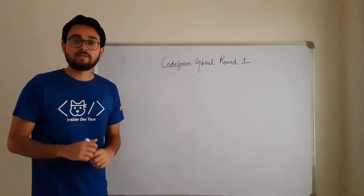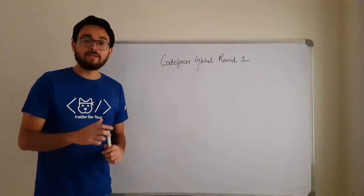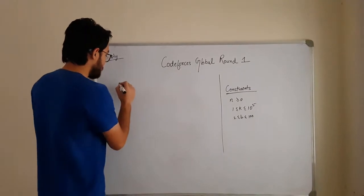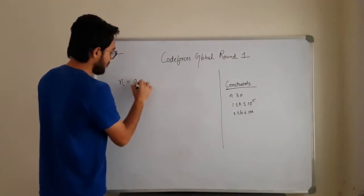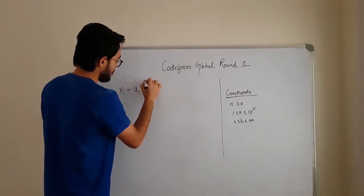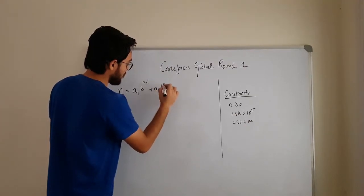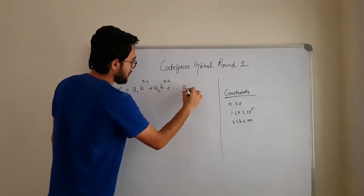For detailed problem statement, you can follow the link mentioned in the description below. I will give you a brief idea what the problem wants to say. You are given a number n, which is of the form a1 b to the power k minus 1 plus a2 b to the power k minus 2 plus dot dot dot ak.